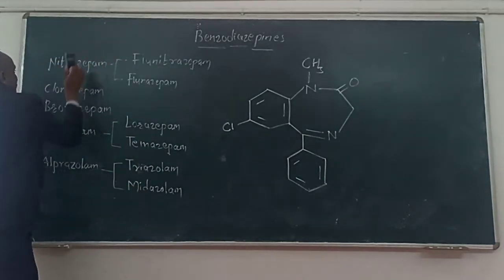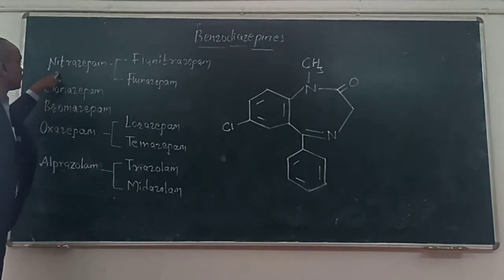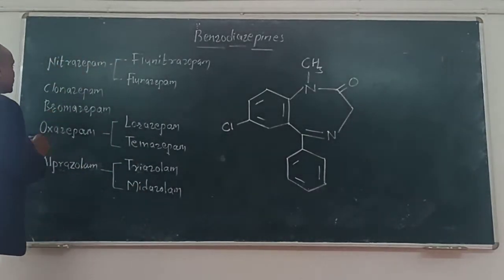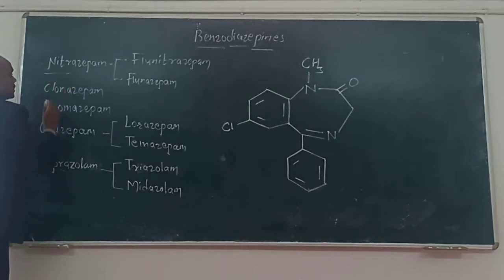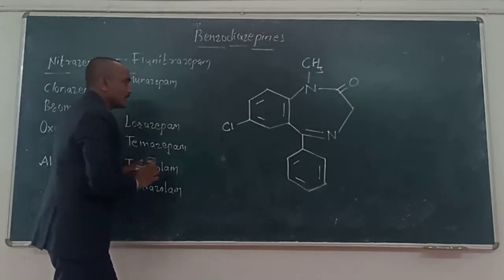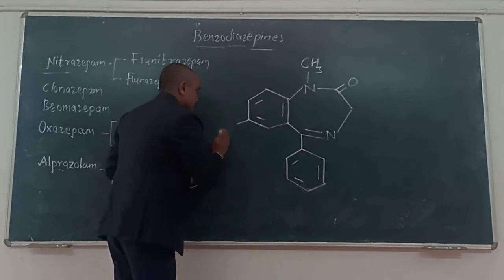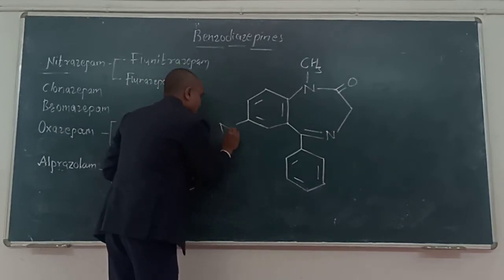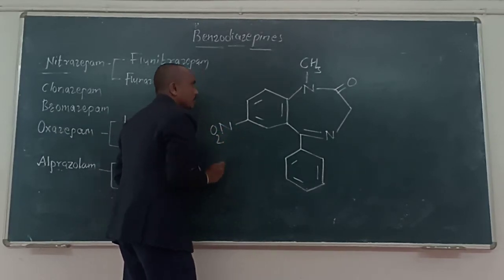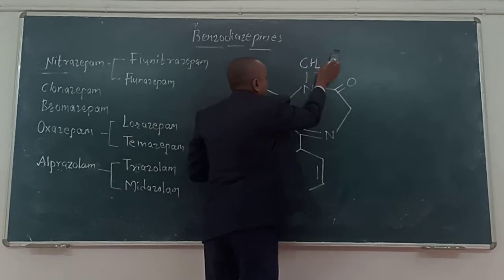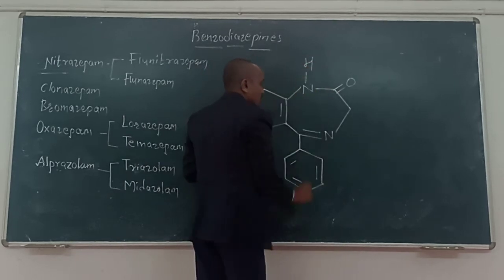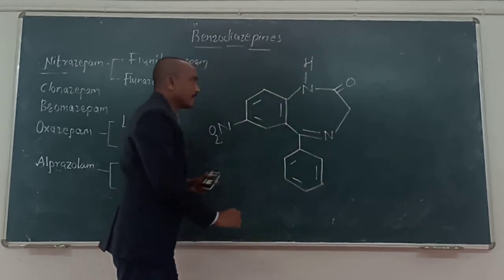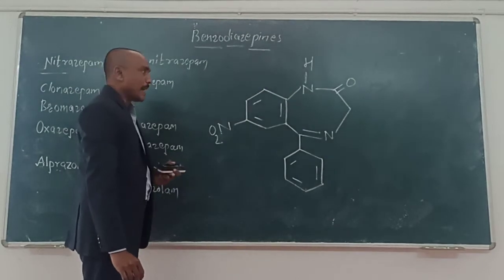From diazepam, we can prepare the nitrazepam structure. The name of the drug indicates the presence of nitro — that means chlorine is replaced with the nitro group. And one more change: the methyl group is replaced with hydrogen. And it becomes the structure for nitrazepam.